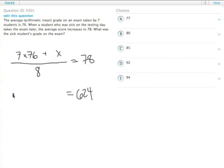7 times 76 equals 532, plus that unknown score. And we subtract 532 from both sides, and we get 92.